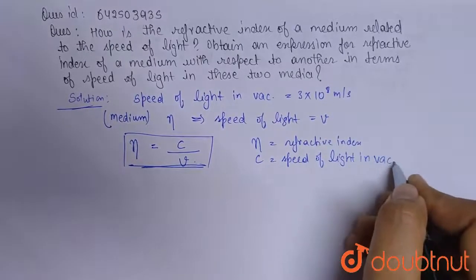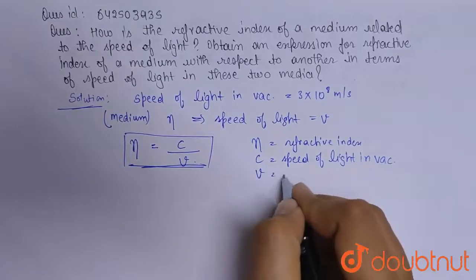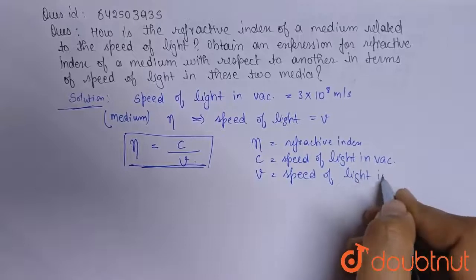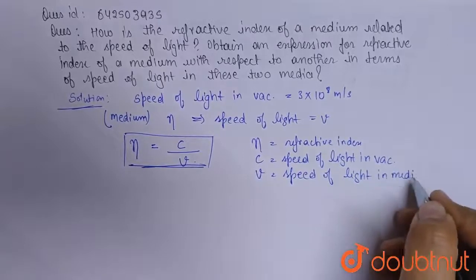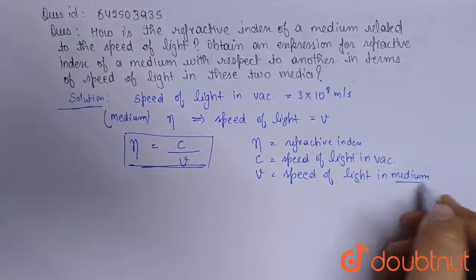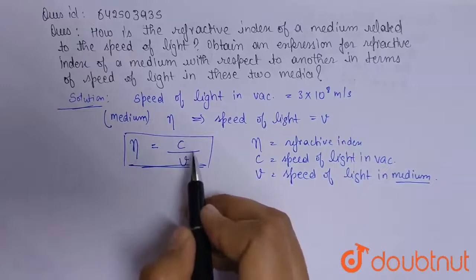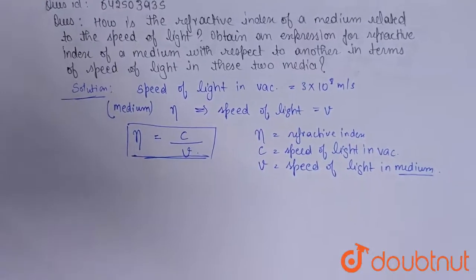and v is the speed of light in medium. So this is the relation between refractive index and the speed of light in medium. Now for two mediums, this is medium one